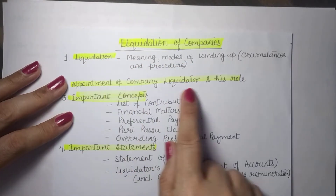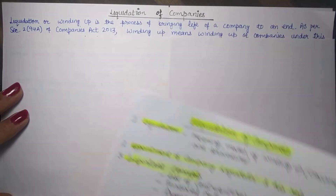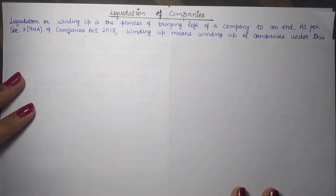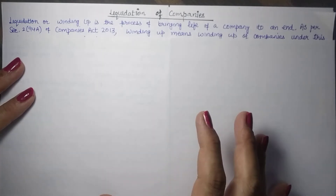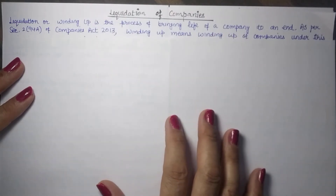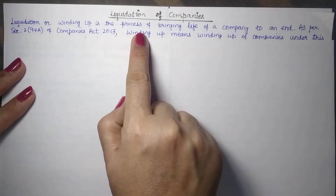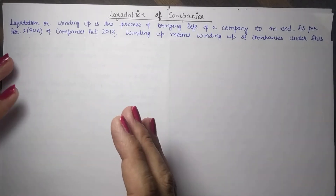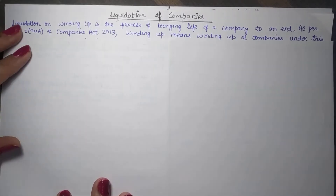Let us start with liquidation — its meaning, modes, and appointment of company liquidator and their role. Liquidation is basically a process of winding up of a company. A company is an artificial legal person, created through provisions of the Companies Act. When a company comes into existence through legal provisions, its life can also be ended only through legal provisions. So liquidation or winding up is the process of bringing the life of the company to an end.